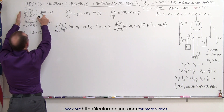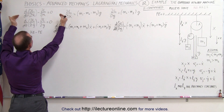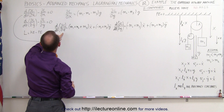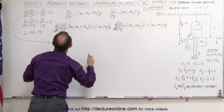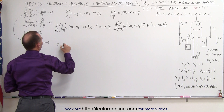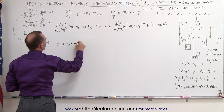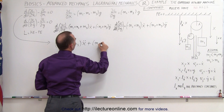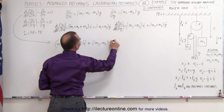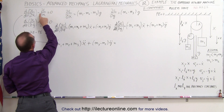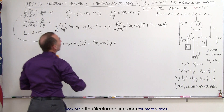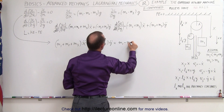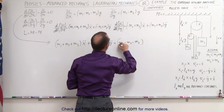First we're going to take this one and move the partial of L with respect to x to the other side, set them equal to each other. Using this first equation we take the time derivative of the partial value with respect to x-dot, which is this quantity right here: m1 plus m2 plus m3 times x-dot, plus m3 minus m2 times y-dot. We set it equal to the partial value with respect to x — the negative becomes a positive when we move to the other side — giving us m1 minus m2 minus m3 times g.